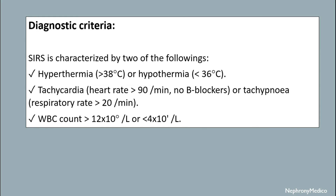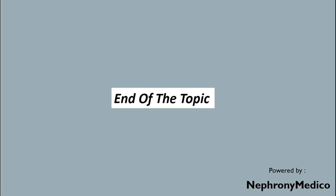The criteria include: hyperthermia greater than 38°C or hypothermia less than 36°C; tachycardia with heart rate more than 90 beats per minute with no beta blockers; or tachypnea with respiratory rate more than 20 breaths per minute; and WBC count more than 12 × 10⁹. There is something missing here — you can note it from your textbook. That is the end of the topic.